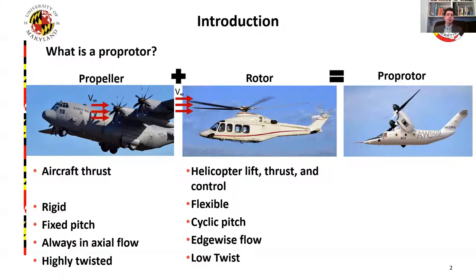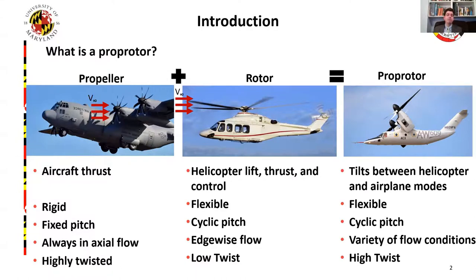A prop rotor is used on tilt rotors and operates in helicopter and airplane mode and everything in between. Because of that, it has to be flexible with cyclic pitch control but still highly twisted to accommodate a variety of flow conditions.